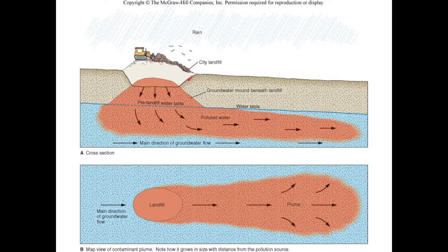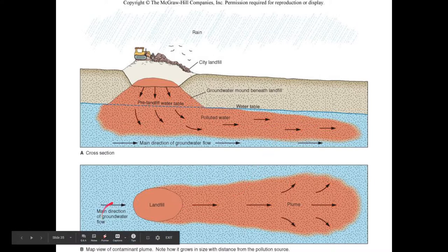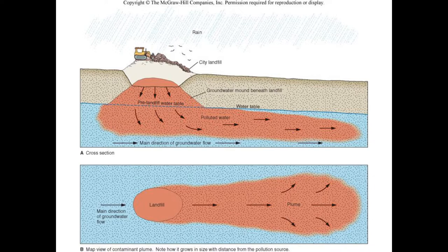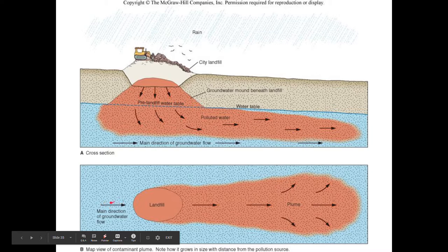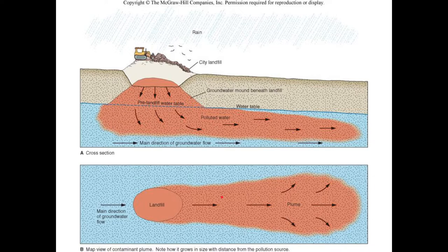Landfills these days are regulated and designed with special lining systems that can be monitored, with pipes to remove water under the landfill so there's no contamination. But you can get polluted water from landfills and that plume will move along depending on the direction of groundwater flow. If you want to buy cheap land near a landfill, make sure which way the groundwater is flowing and buy land on the uphill or upflow side. In general, don't plan on drinking groundwater anywhere near a landfill.